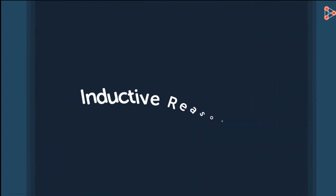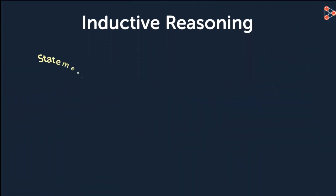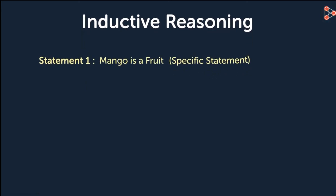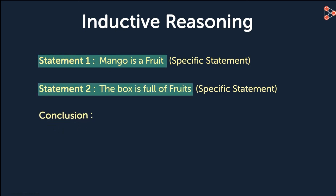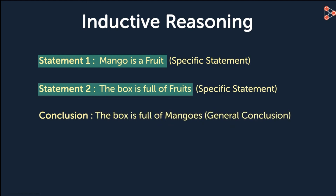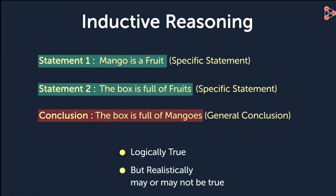In this example, what is the conclusion? Mango is a fruit. The box is full of fruits. We have a conclusion using inductive reasoning: the box is full of mangoes. That conclusion is logically true, but realistically it doesn't work, because there could be other fruits in that basket. Inductive reasoning moves from a specific argument to a general conclusion. This is deductive reasoning.